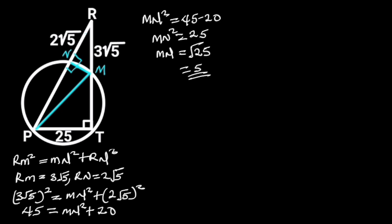Going further, in triangle NRM, if we call this angle alpha, then the remaining angle of this triangle will be 90 degrees minus alpha. Reason: the sum of angles in a triangle is equal to 180 degrees. Next, let's focus on triangle TRP. Triangle TRP is a right triangle, and it has a common angle with triangle NRM which we have already taken as alpha, so the remaining angle will be 90 degrees minus alpha.